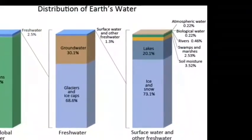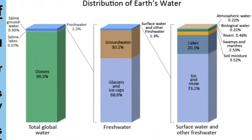Within that 6.8%: 0.22% of water is in the atmosphere as water vapors, as discussed in the water cycle; 0.22% is water used by biological organisms — plants and animals; 0.46% is flowing in the rivers of the world; 2.53% is found in swamps and marshlands; and 3.52% is absorbed by the soil. That was the fresh water available for us, constituting only 1.3% of total water.